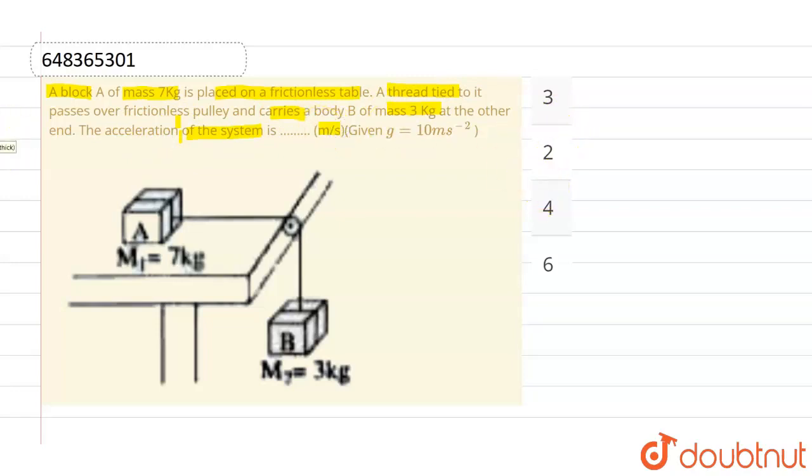Now, let us suppose that this particular block is going down with an acceleration A. Then, this block will move in this particular direction with the same acceleration A because they are both tied with a single thread, which is non-extensible.